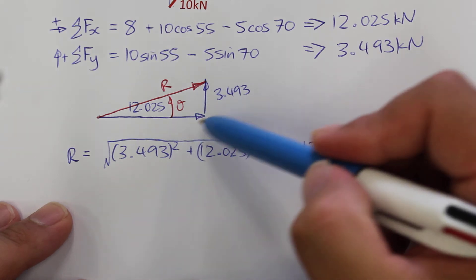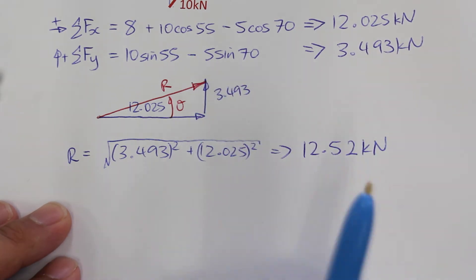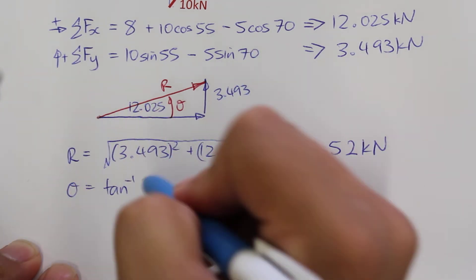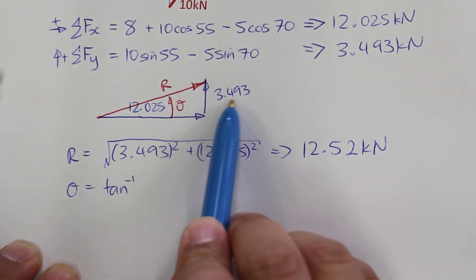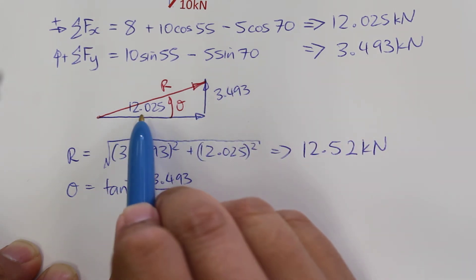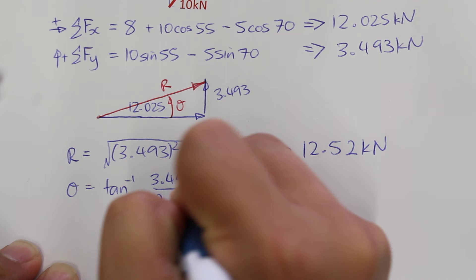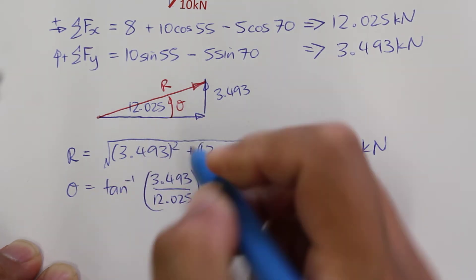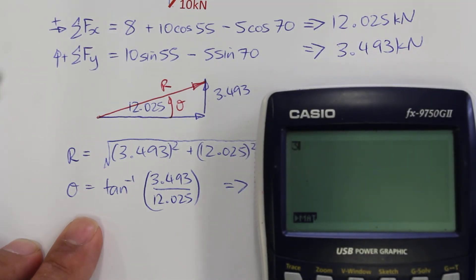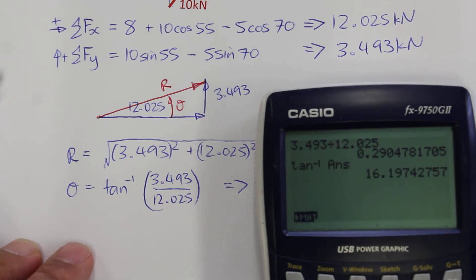The angle for the resultant we can find using the tan rule, where the opposite is 3.493 and the adjacent is 12.025. The angle theta will be 3.493 divided by 12.025, and inverse tan of that value we have 16.2 degrees.